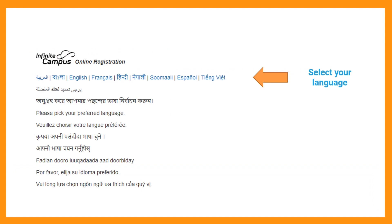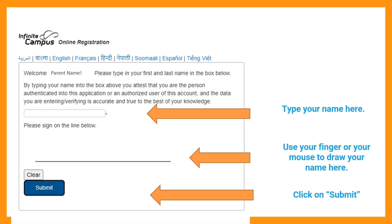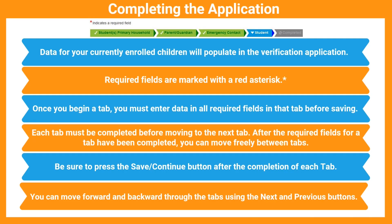Once you have selected your preferred language, you'll need to type and sign your name. Click on submit and you'll enter the annual verification application.